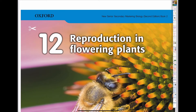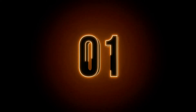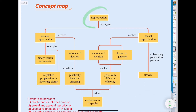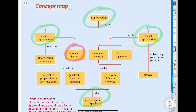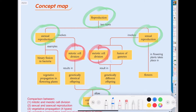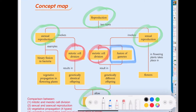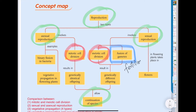Let's take a look at the concept map of the whole chapter. The main theme is reproduction, and the purpose of reproduction is to allow continuation of species. There are two types: asexual reproduction and sexual reproduction. We need to recall from chapter 11 — mitotic cell division in asexual reproduction and meiotic cell division in sexual reproduction. In sexual reproduction, we also learn one very important process, which is the fusion of gametes — in other words, fertilization.